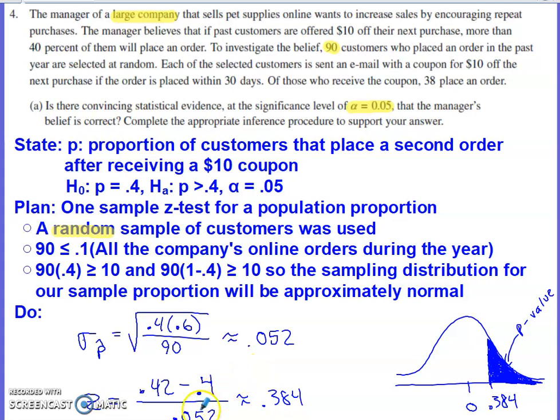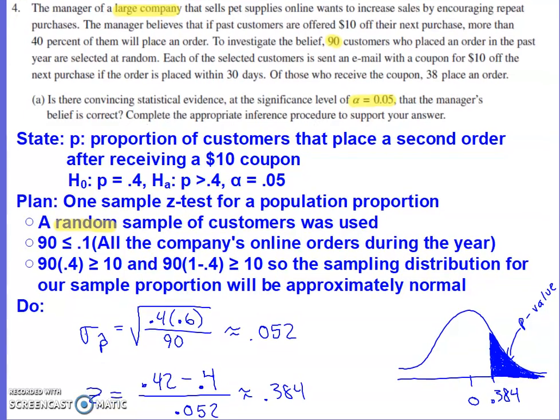You must show the computation for your z-score. The calculation is the sample proportion (38/90 ≈ 0.42) minus the assumed true proportion from the null hypothesis (0.4), divided by the standard deviation for the sampling distribution (0.052). Our z-score ends up being approximately 0.38.